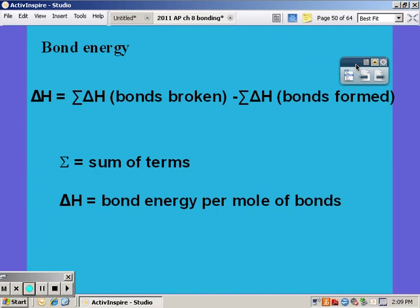Remember that the bonds broken are your reactants and the bonds formed are your products, so in this case it's reactants minus products. Be careful, when we calculated delta H of formation, it was products minus reactants. This is the only time it's reactants minus products.